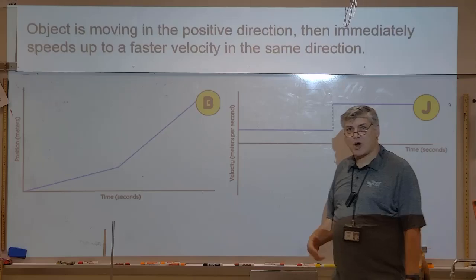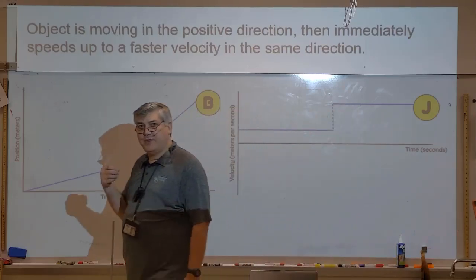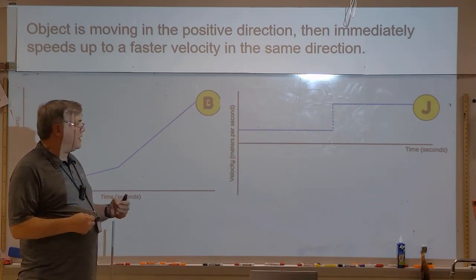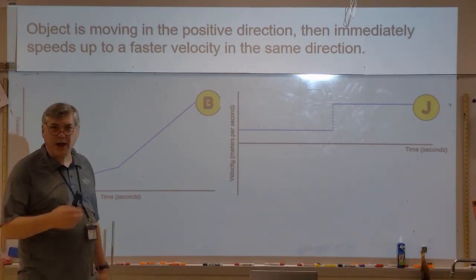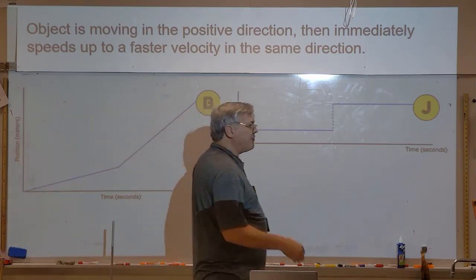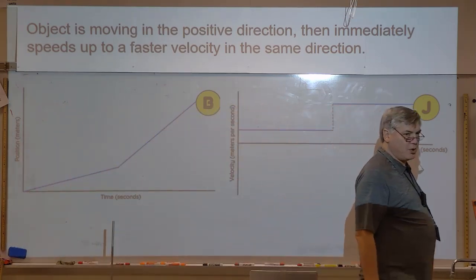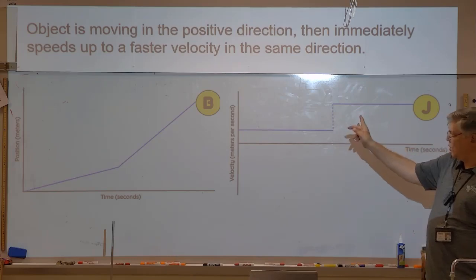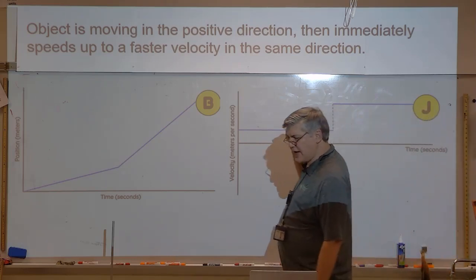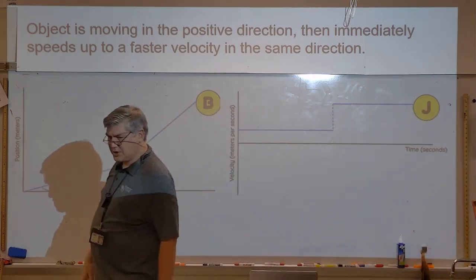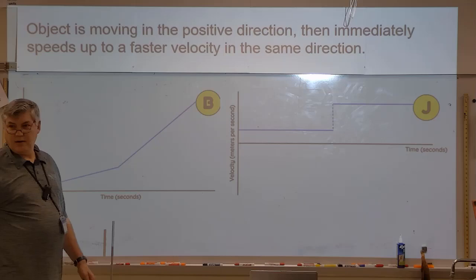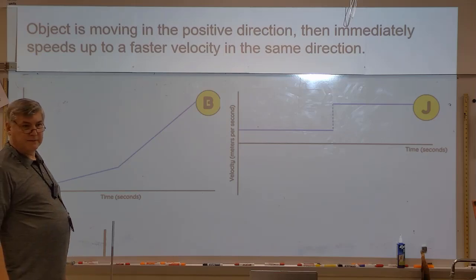So a description for this would be the object is moving in the positive direction and then immediately speeds up in the same direction or goes to a faster velocity in the same direction. So find that one, B and J, and do a quick sketch of the velocity time and the position time graph. Got it? All right.